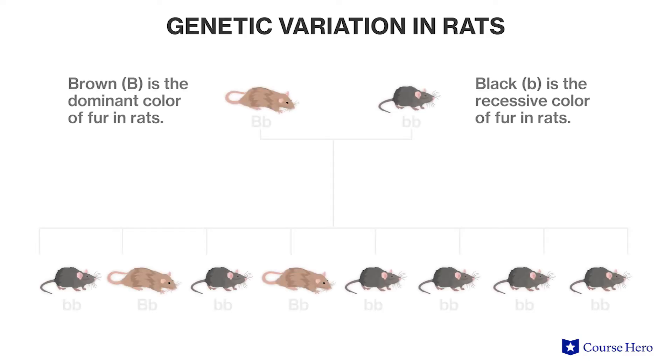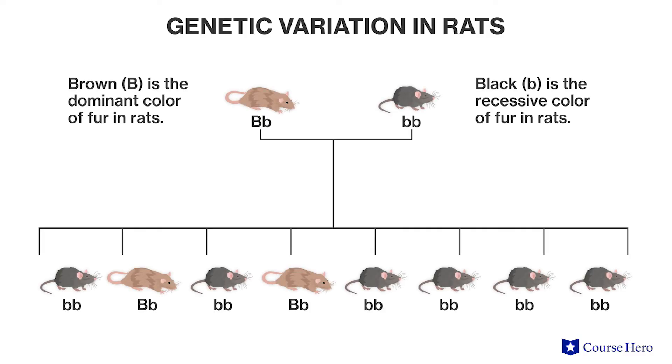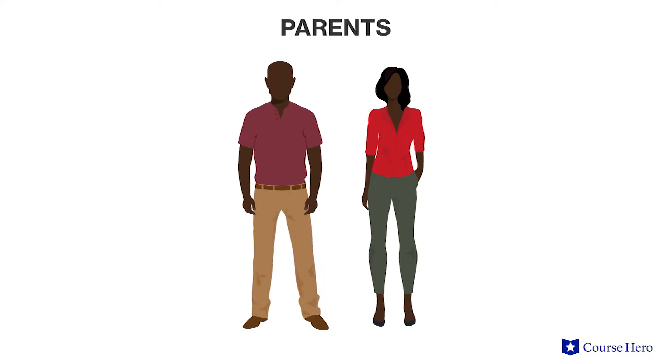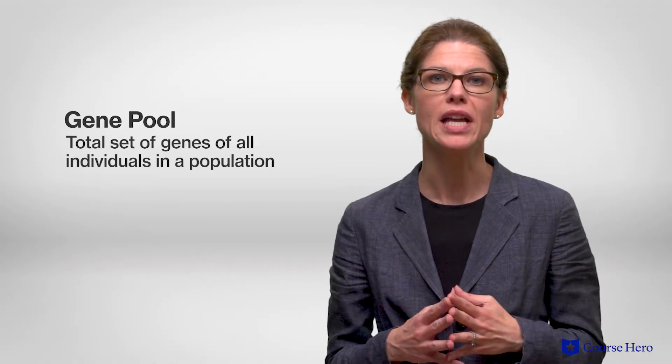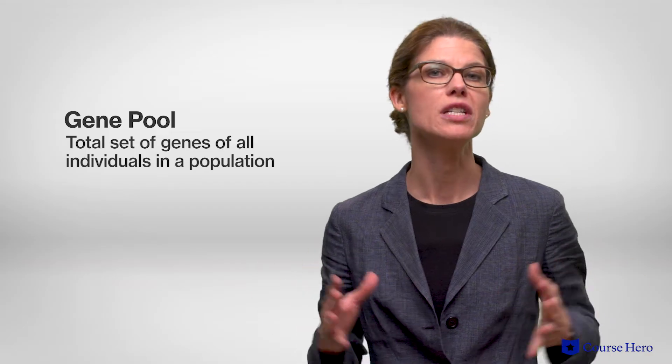For example, one gene is responsible for determining whether rats will have brown or black fur. With the exception of clones, such as identical twins, each individual within a population carries a unique set of genes, half of which were received from one parent and half from the other. The total set of genes of all individuals in a given population is called the gene pool.